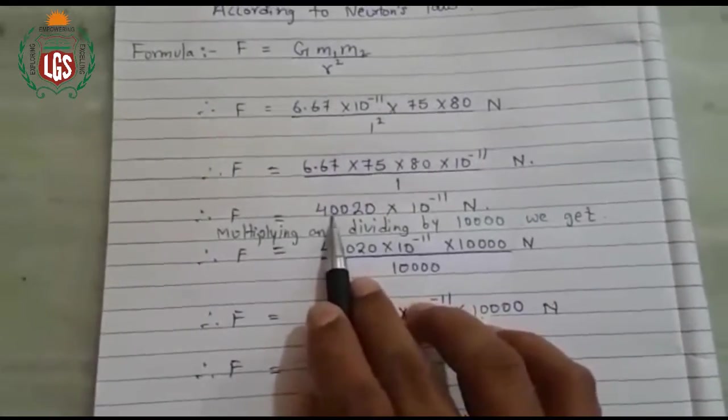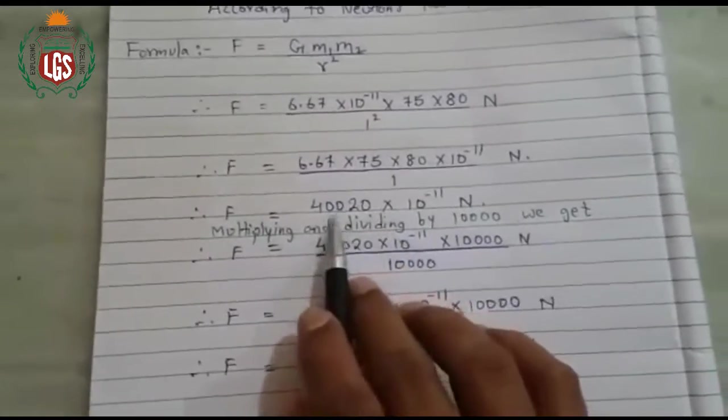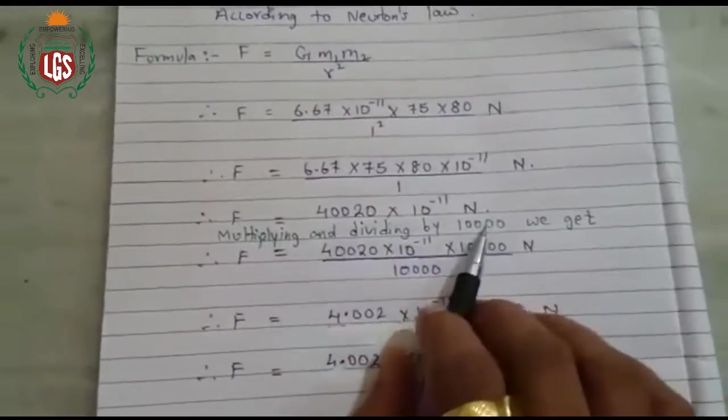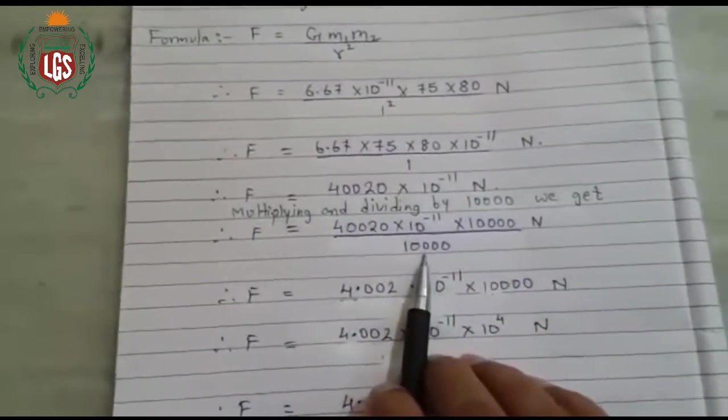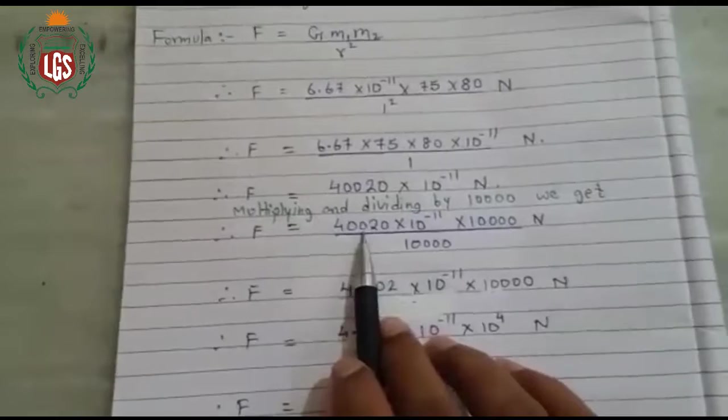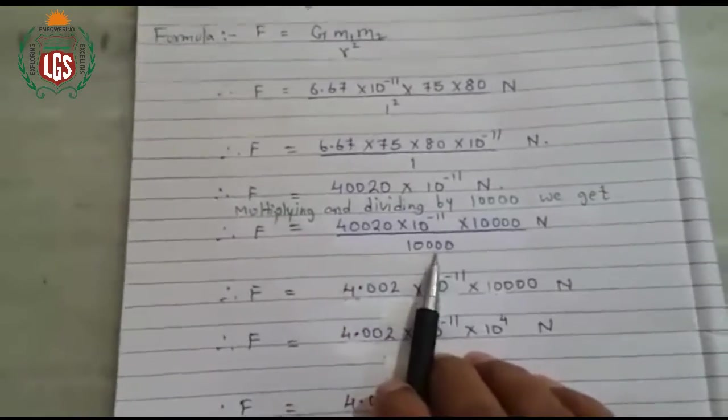See, you can see 1, 2, 3, 4. If you want to shift the decimal by 4 digits, you have to multiply and divide by 10,000. So the answer will be, now this 10,000, 40020 gets divided by 10,000.